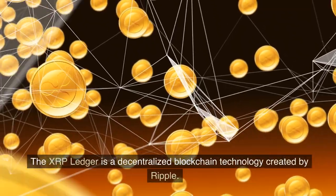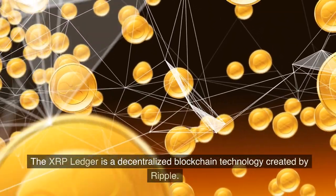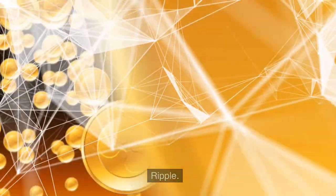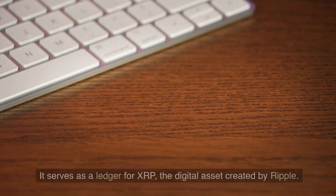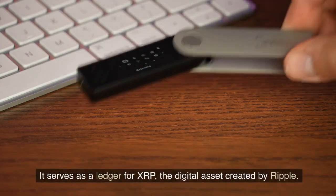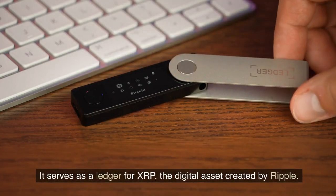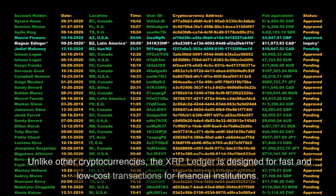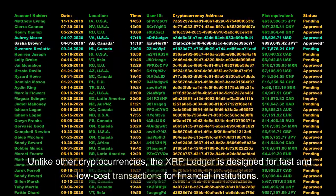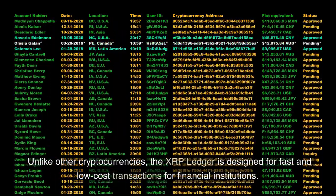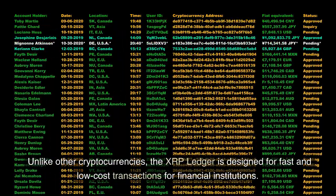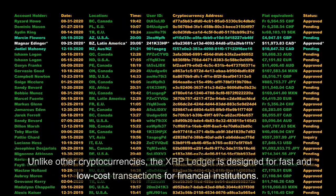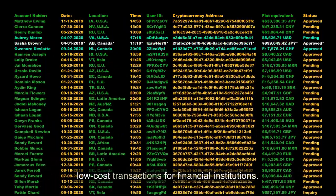The XRP Ledger is a decentralized blockchain technology created by Ripple. It serves as a ledger for XRP, the digital asset created by Ripple. Unlike other cryptocurrencies, the XRP Ledger is designed for fast and low-cost transactions for financial institutions.